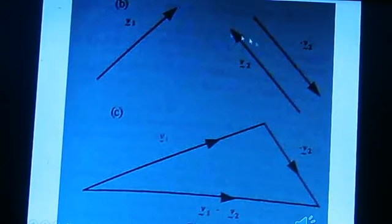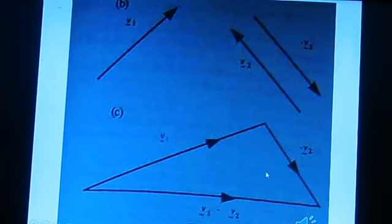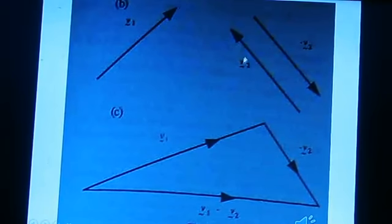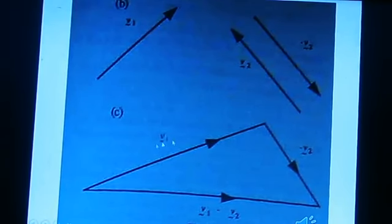So when we subtract V1 minus V2, the V2 is in the opposite direction. So V1 plus the negative direction of V2, that will be V1 minus V2. We want to subtract, so we reverse V2. The V1 and the reversed V2 direction, when we add, that will be V1 minus V2.